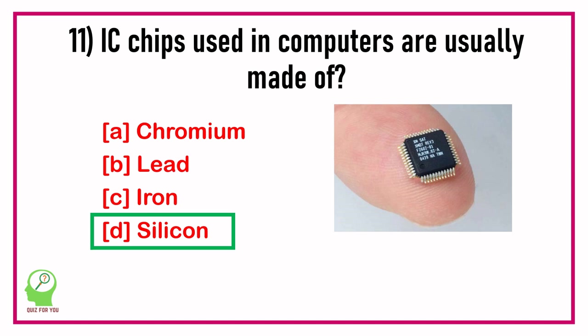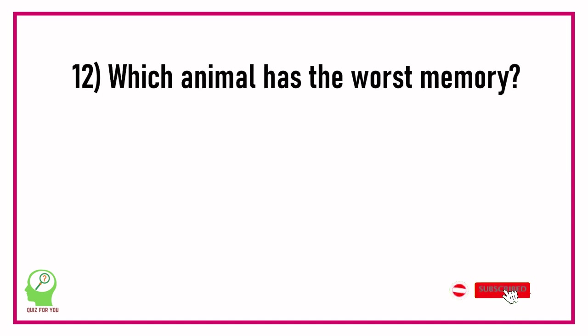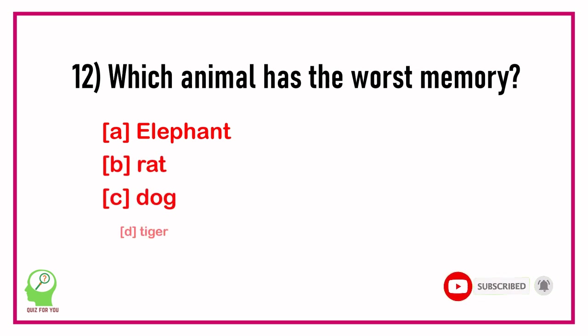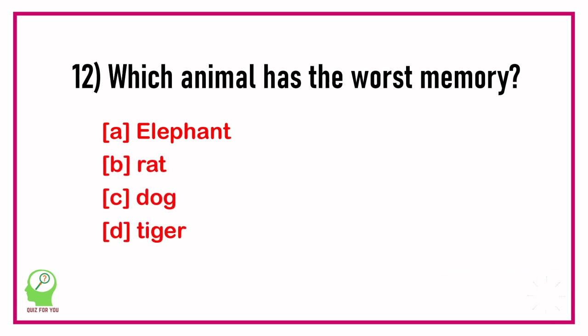Question number twelve: Which animal has the worst memory? Options are: Elephant, Rat, Dog, Tiger.